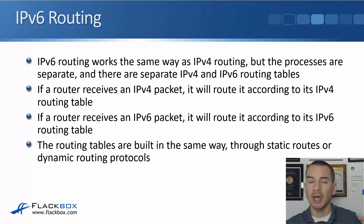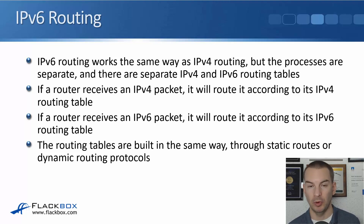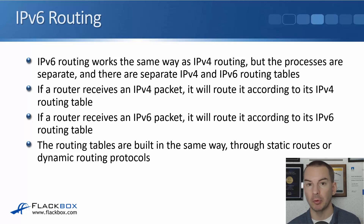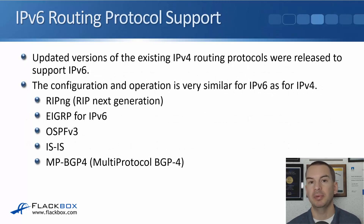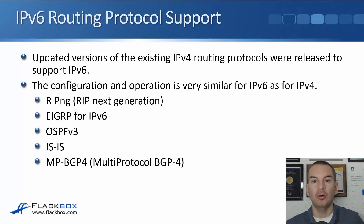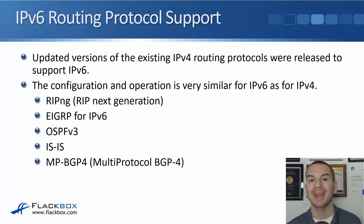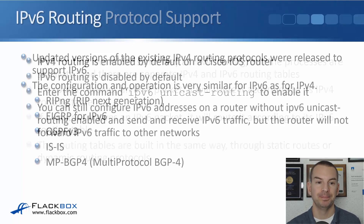The IPv4 and IPv6 routing tables are built in exactly the same way — through static routes or via dynamic routing protocols like RIP, EIGRP, and OSPF. All of those dynamic routing protocols support both IPv4 and IPv6.